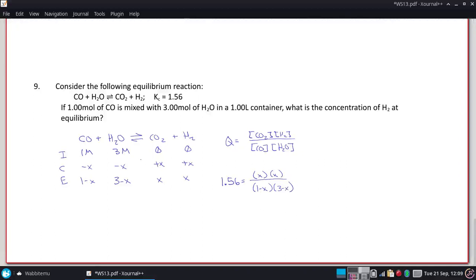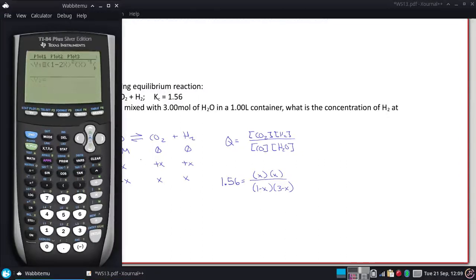Okay, so power up our calculator. We're going to put in X times X all over one minus X and three minus X minus 1.56. And we have a crossing right there. So I'm going to calculate a zero that is going to be somewhere between zero, and the largest it could be is one, because that will make that one term go to zero. We're going to start our guess at zero, and we get an X of 0.809.